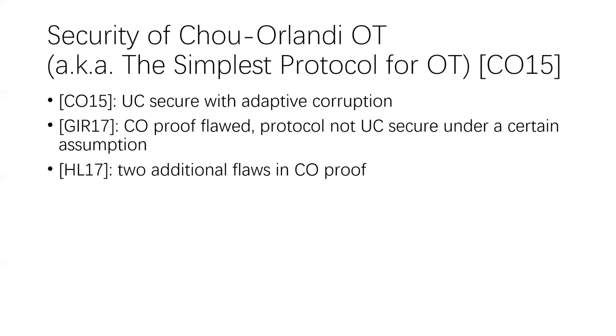In 2015, Chou and Orlandi wrote a paper with the title, The Simplest Protocol for Oblivious Transfer, in which they proposed a protocol and claimed it to be UC-secure, even in the adaptive corruption setting. This protocol soon gained much attention, and the most efficient implementations nowadays are based on this protocol. However, in 2017, there were two papers showing three flaws in the original security proof in the Chou-Orlandi paper. There's even an impossibility result which shows that a UC proof is impossible, assuming that a certain assumption holds.